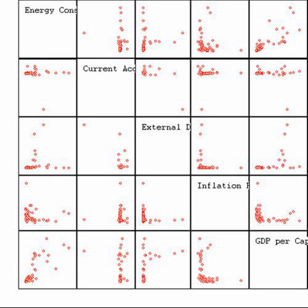Descriptive statistics are most often concerned with two sets of properties of a distribution, sample or population. Central tendency or location seeks to characterize the distribution's central or typical value, while dispersion or variability characterizes the extent to which members of the distribution depart from its center and each other.